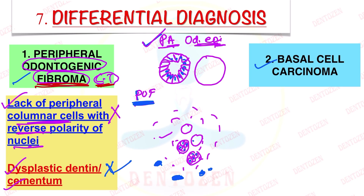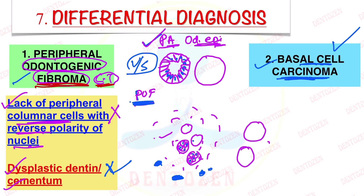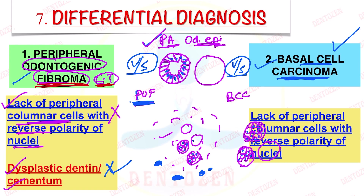Now talking about basal cell carcinoma — it is a malignant tumor of the basal epithelial cells of the skin. In this we can also see islands, but all the cells in these islands look similar to basal cells, called basaloid cells, with hyperchromatic nuclei. The key differentiating feature is that in basal cell carcinoma we will not see reverse polarity of nuclei. The peripheral columnar cells with reverse polarity of nuclei will be seen only in peripheral ameloblastoma and not in basal cell carcinoma. That is how we differentiate these two.